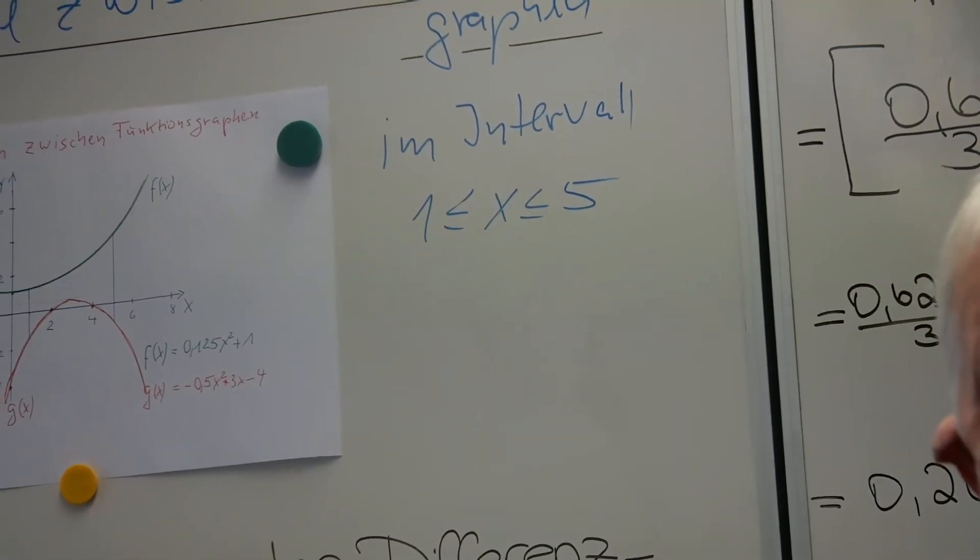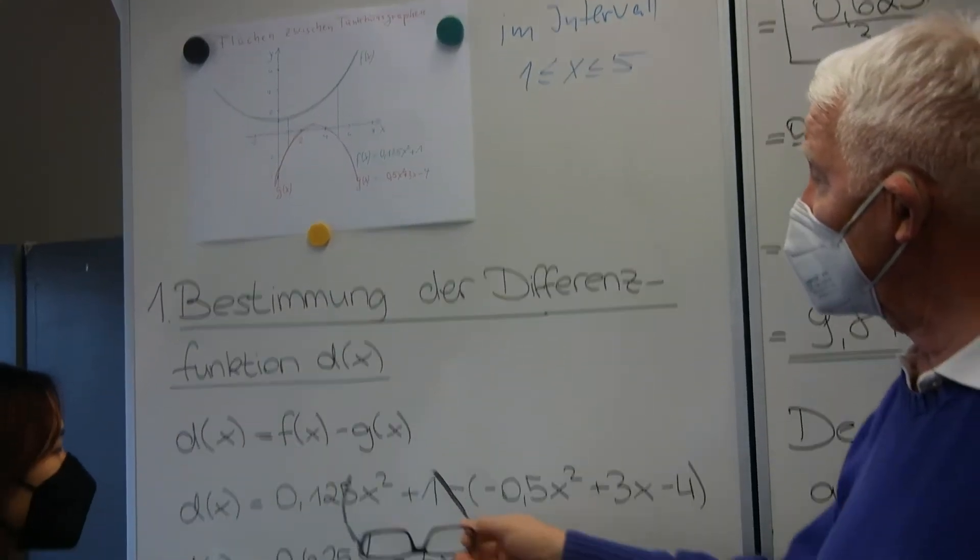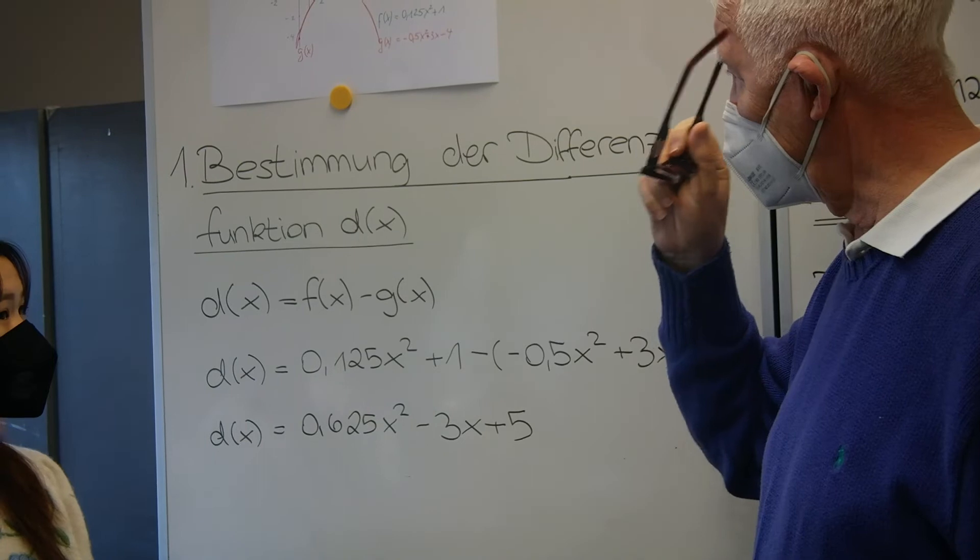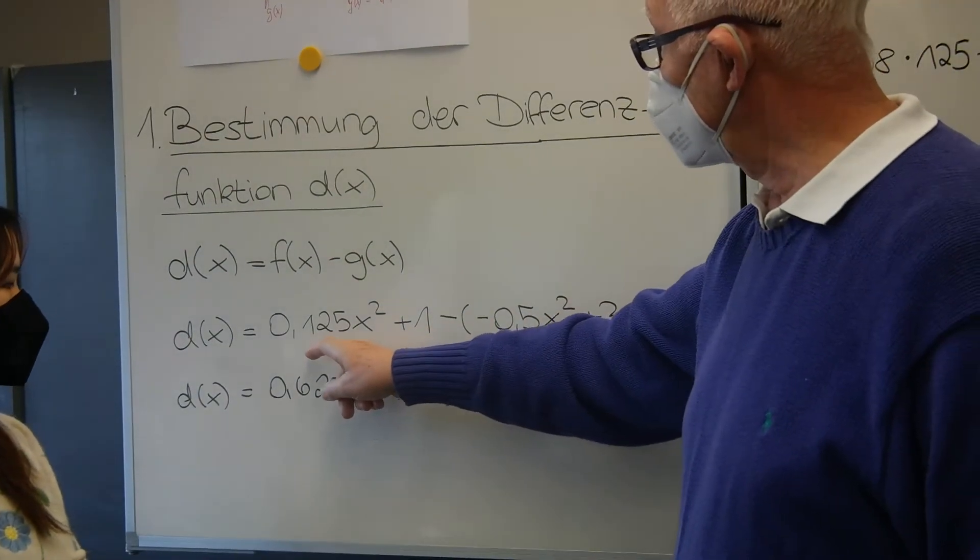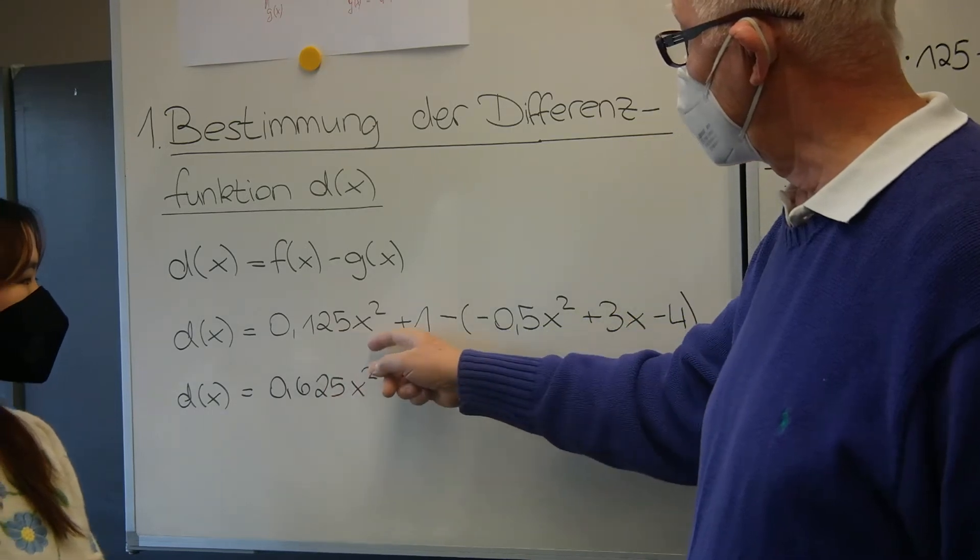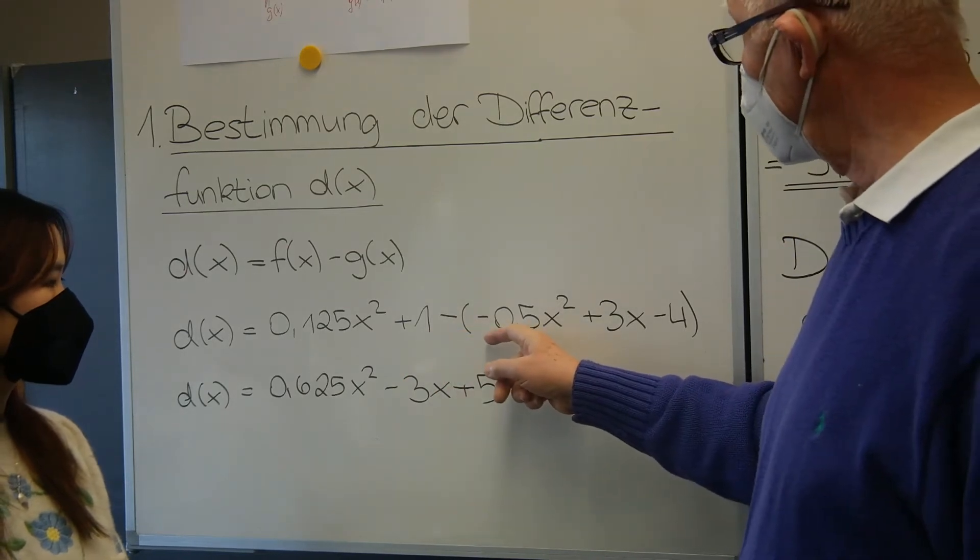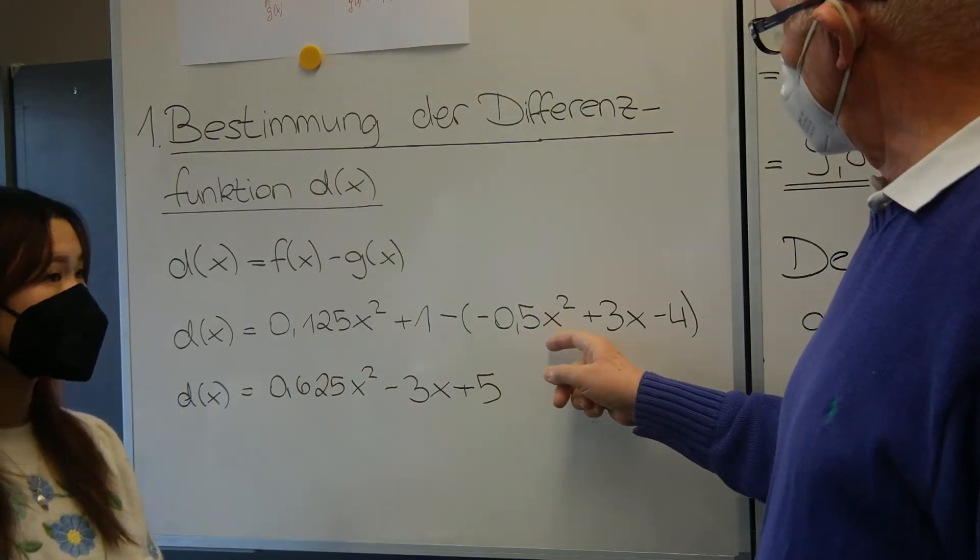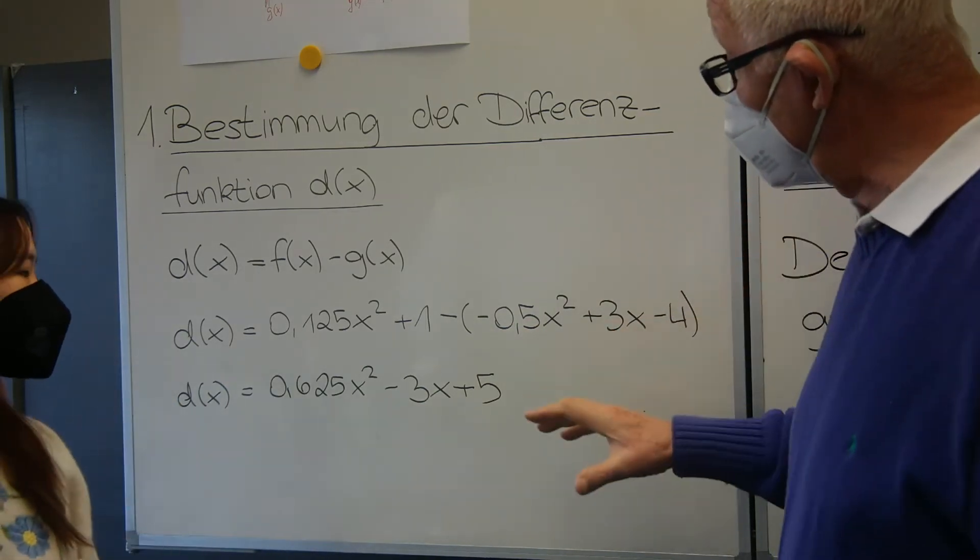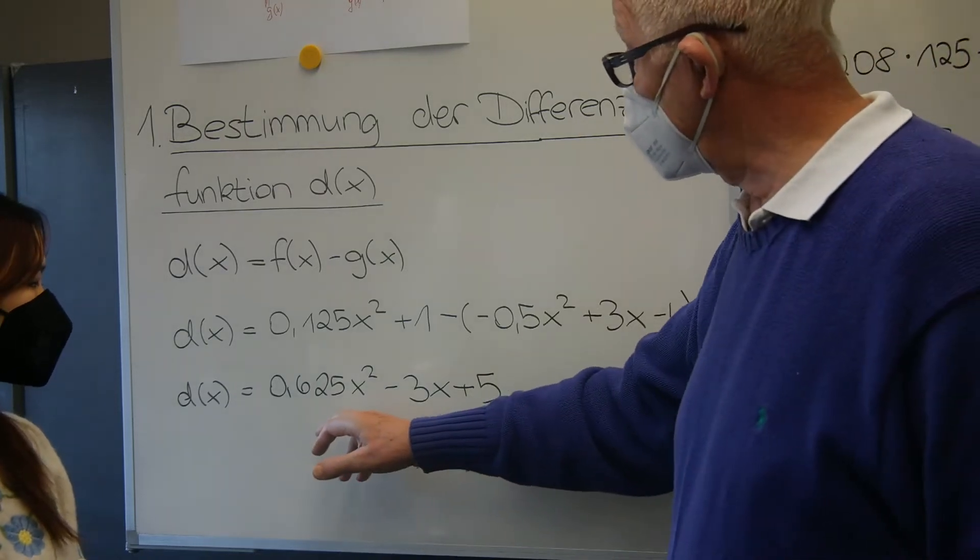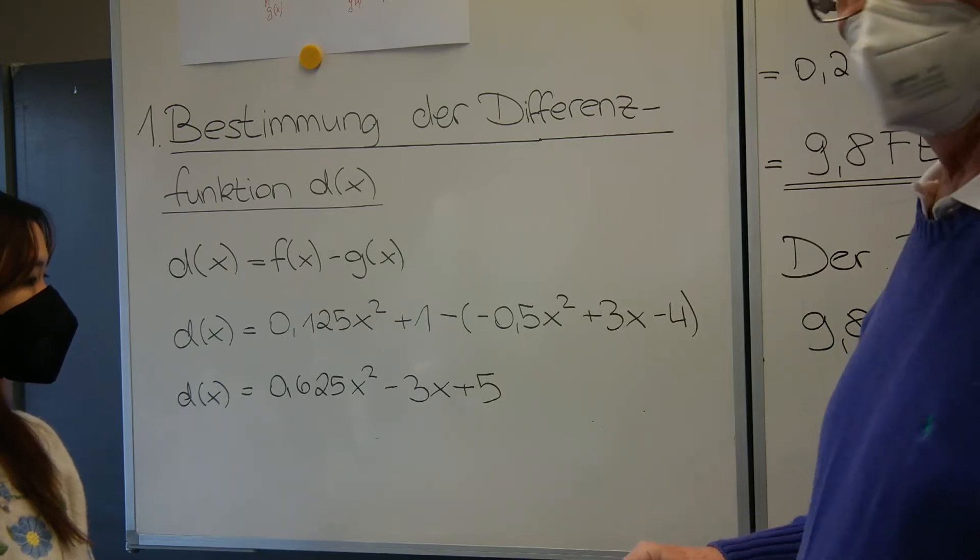Wie üblich bestimmen wir die Differenzenfunktion. Die Differenzenfunktion haben wir hier dargestellt als f von x minus g von x. f von x war 0,125 mal x² plus 1, g von x also minus und dann minus 0,5x² plus 3x minus 4. Das Ergebnis dieser Differenz ist 0,625x² minus 3x plus 5.